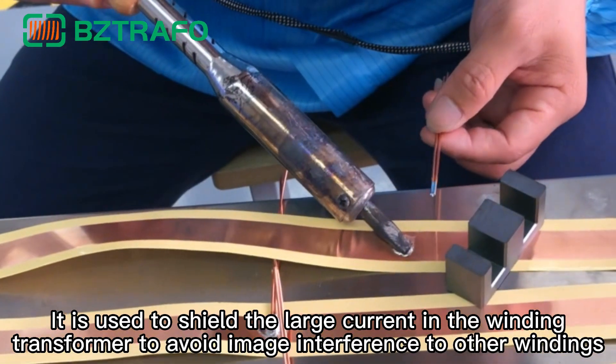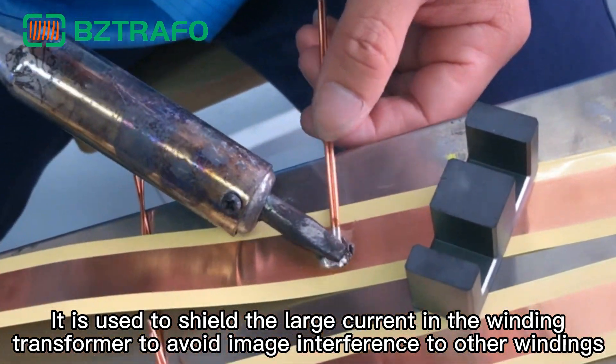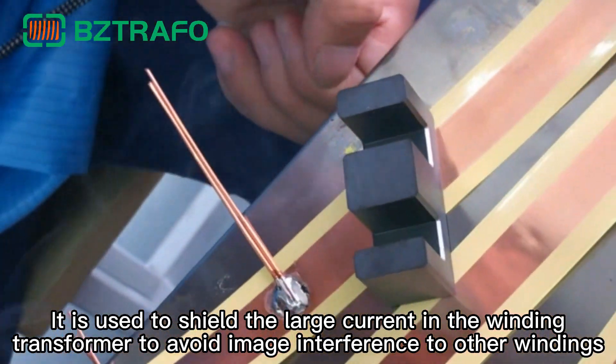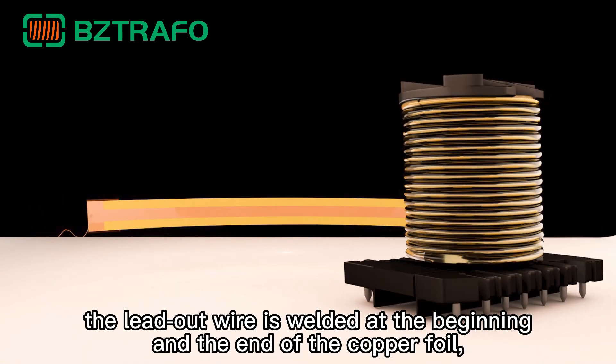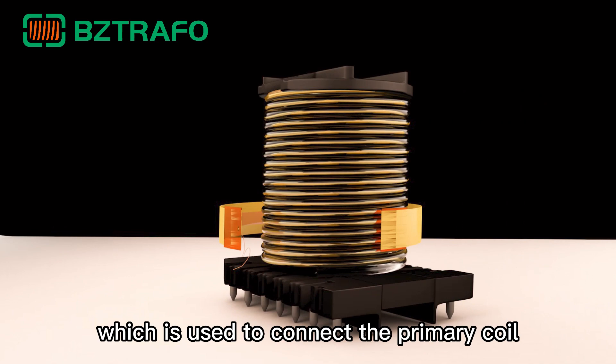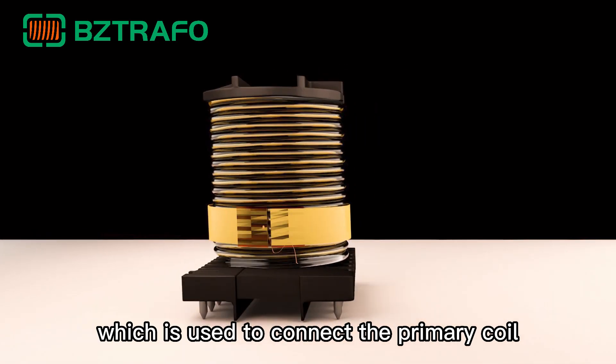First, it is used to shield the large current and the winding transformer to avoid interference to other windings. At this time, the lead-out wire is welded at the beginning and the end of the copper foil, or only one side, which is used to connect the primary coil.